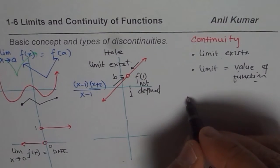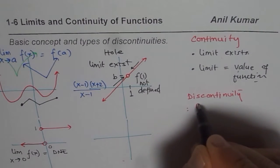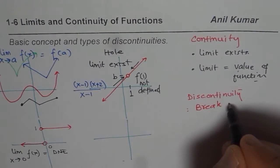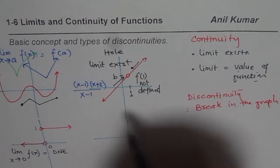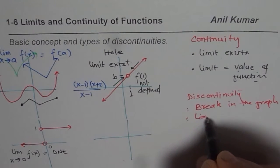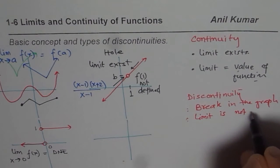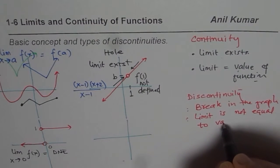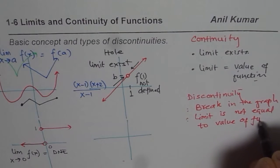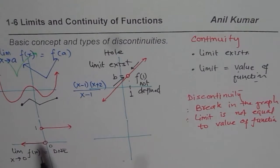For discontinuity, a couple of things apply: first, there is a break in the graph, which is very apparent when you look at it. Second, the limit is not equal to the value of the function. The limit may exist, as we can see, but it is not equal to the value of the function. In the case of jump discontinuity, the limit does not exist itself.